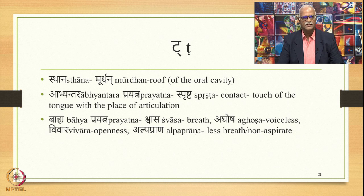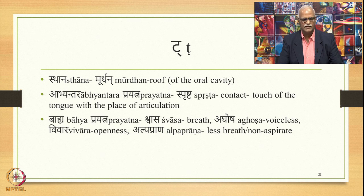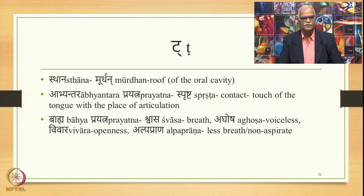Let us look at the next class: the ṭa class. The first letter is ṭa. The place of articulation for ṭa is murdhan — the roof of the oral cavity. The abhyantara prayatna is sprashta — contact or touch of the tongue with the place of articulation. In pronouncing this sound, the tongue rises above and touches the roof of the oral cavity for a fraction of a millisecond, producing ṭa. The bahya prayatna is shvasa (breath), aghosha (voiceless), and vivara (openness). ṭa is alpaprana — less breath, non-aspirate.